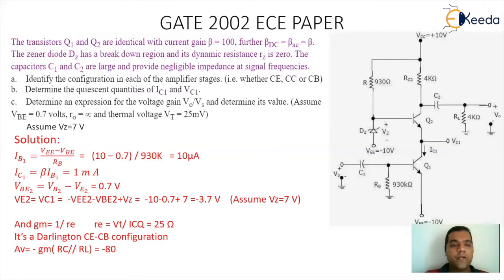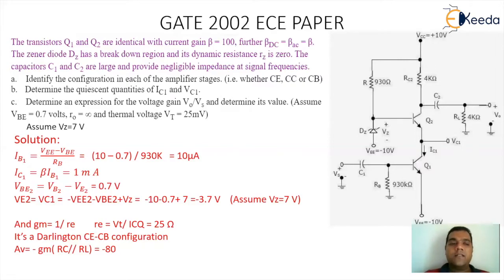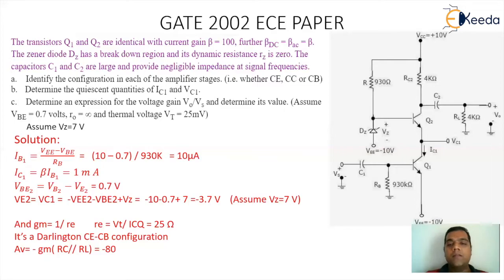VBE2 equals VB2 minus VE2, which is equal to 0.7V. The value of VE2 is equal to VC1 because the collector of the first transistor is as good as the emitter of the second transistor. So VC1 equals minus VE2 minus VBE2 plus VZ, which is minus 10 minus 0.7 plus 7, where VZ was taken as 7V. So the value comes out to be minus 3.7V. This is the value of VC1. So IC1 is 1 milliampere and VC1 is minus 3.7V.